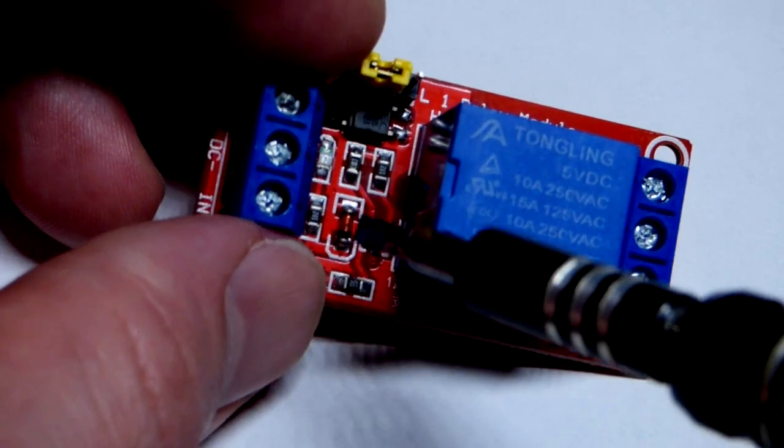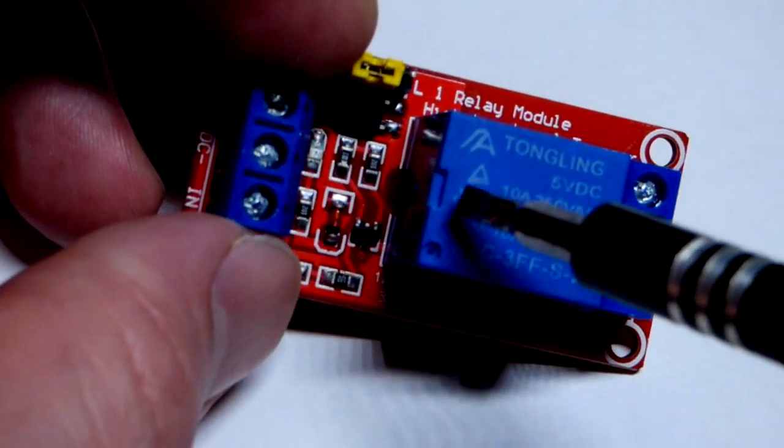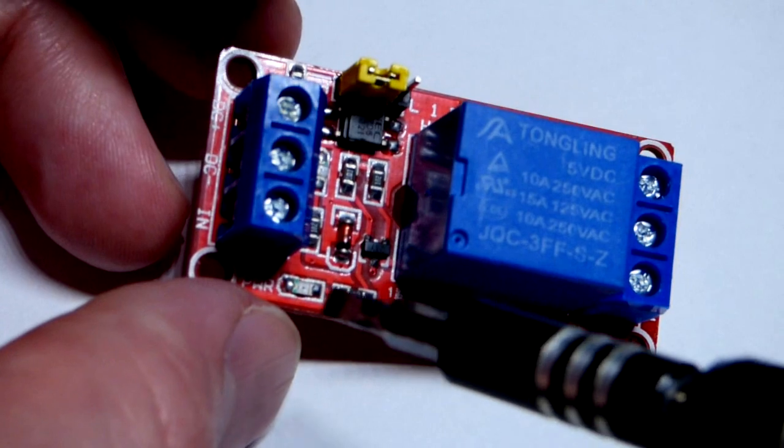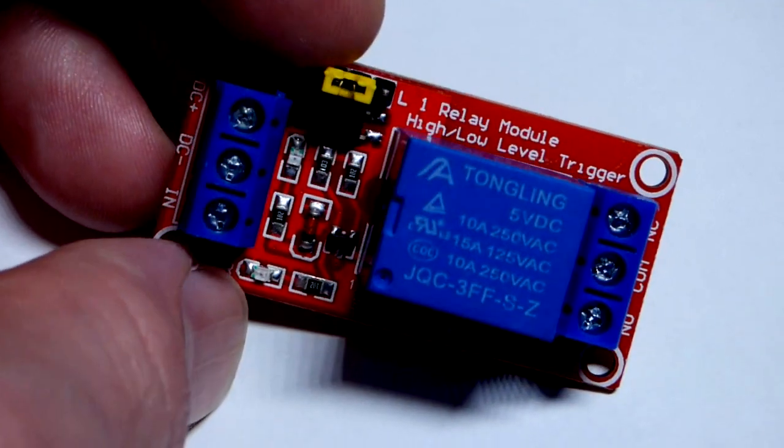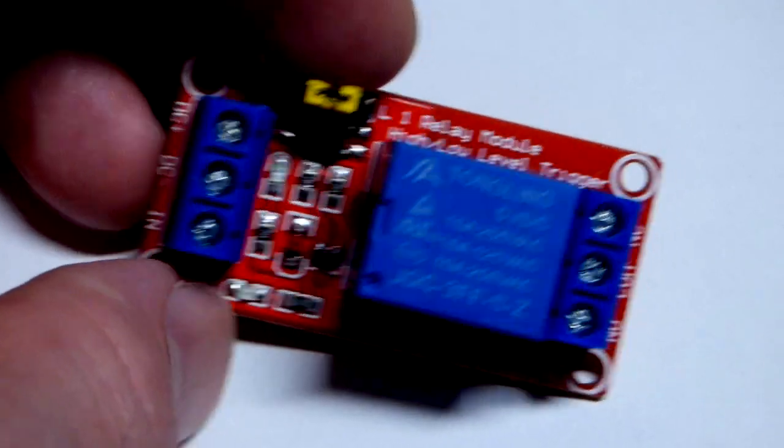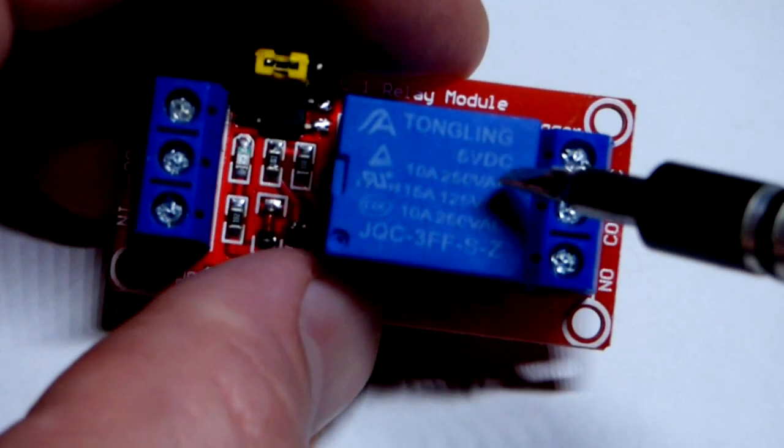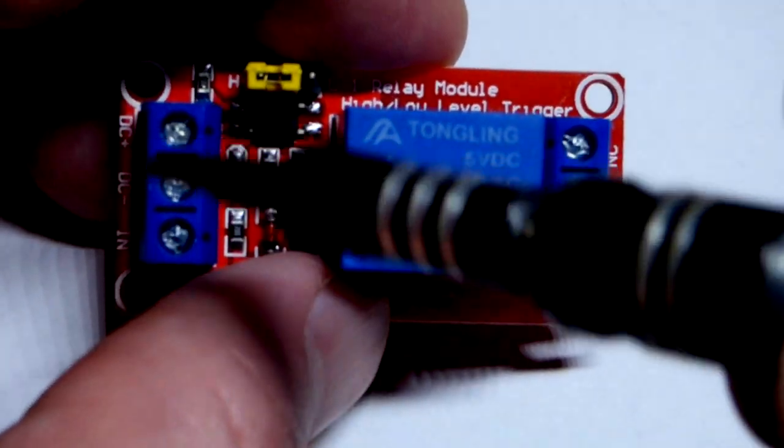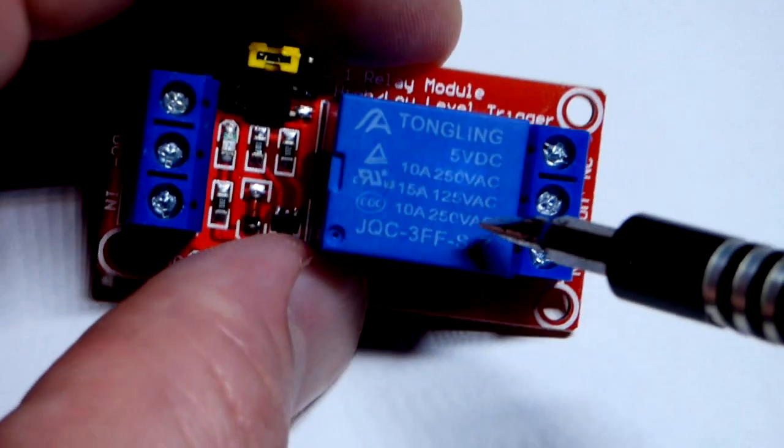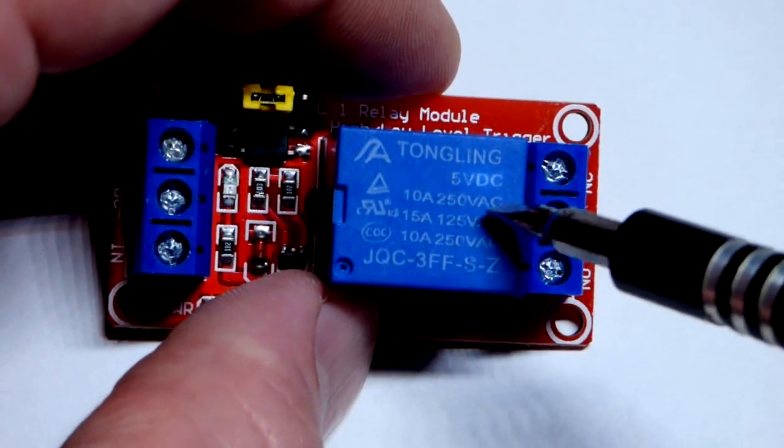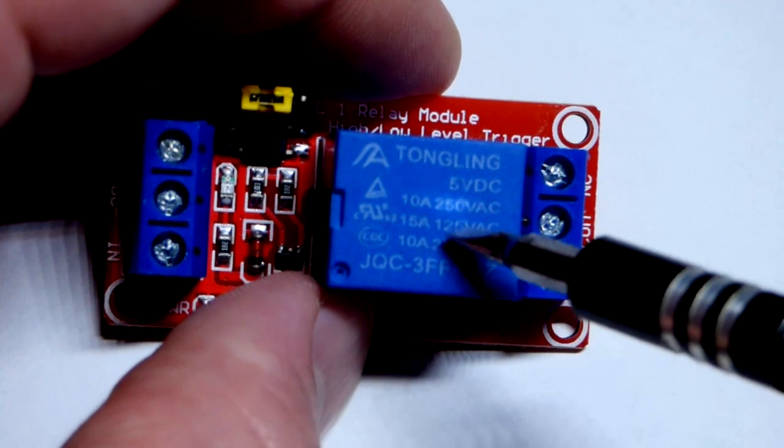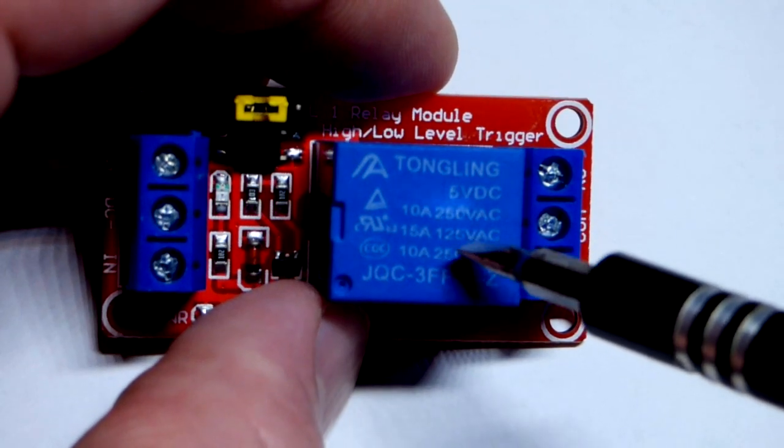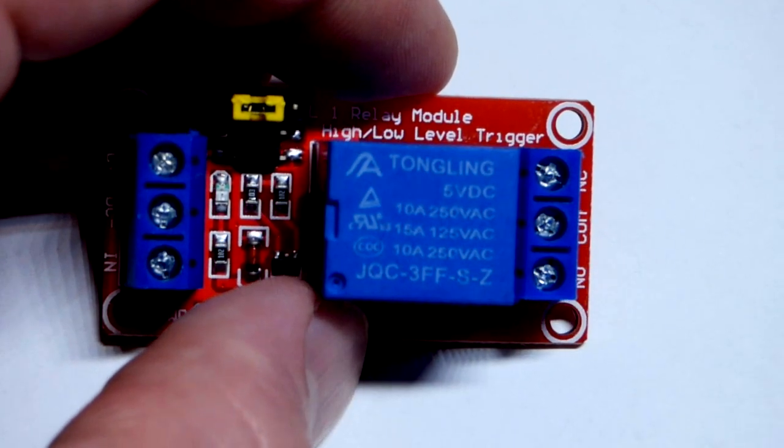You can see a diode - that's probably protecting the coil in there - and there's other components. For the most part we talked about all that's really important. 5 volt DC, that's for switching it. It says 250 volts alternating current 10 amps, 125 volt alternating current 15 amps.